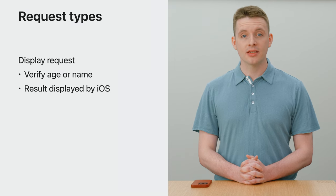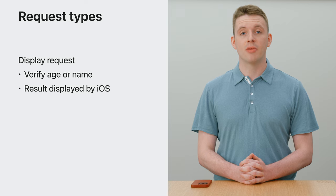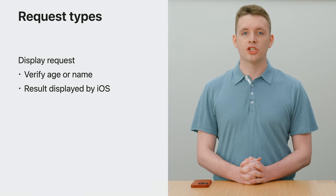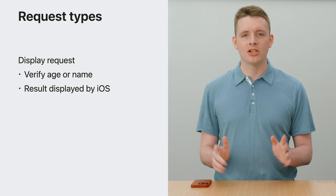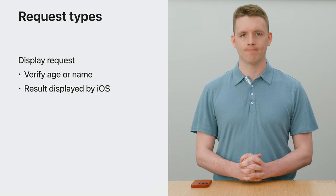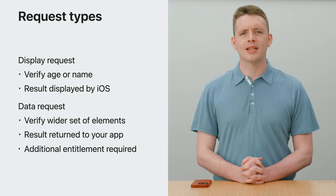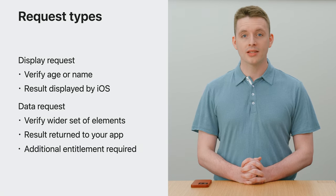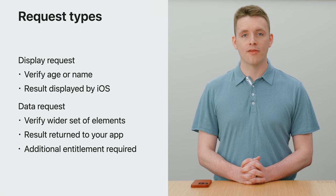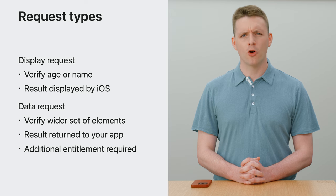Let's talk about the types of requests you can perform with this API. We just demoed the display request, which is suitable for when you need to verify a person's name or age. The result is shown in the system UI, and no ID information is returned to your app. The API also supports data requests, which can request a wider set of document elements such as address, date of birth, and driving privileges, and the result is returned to your app to process. To perform data requests, your app will need an additional entitlement — check the documentation for more information.